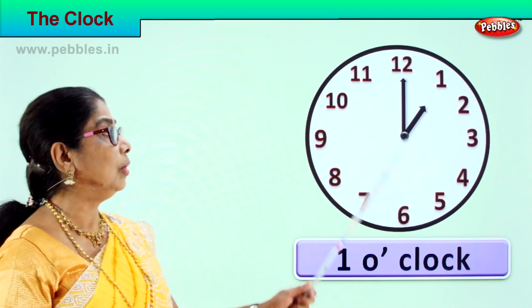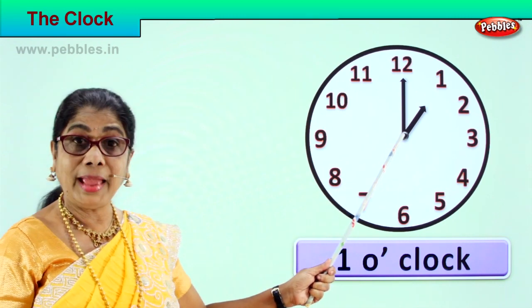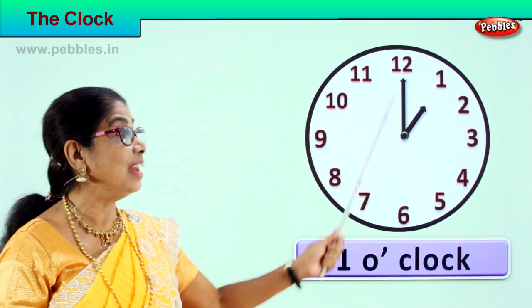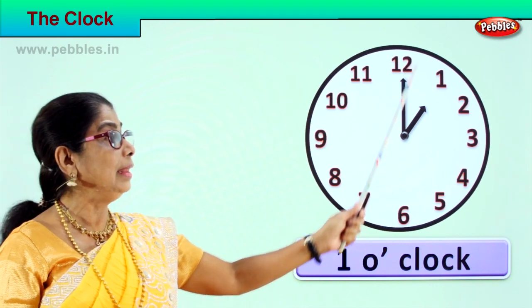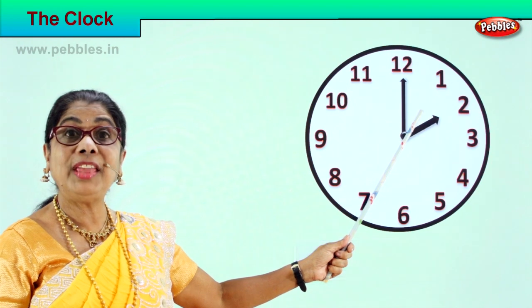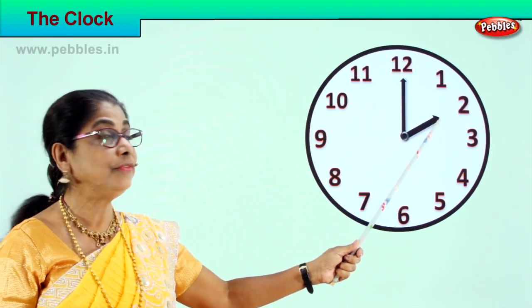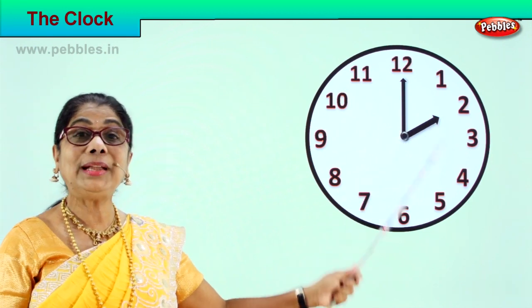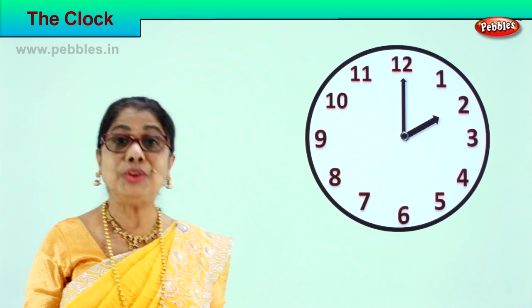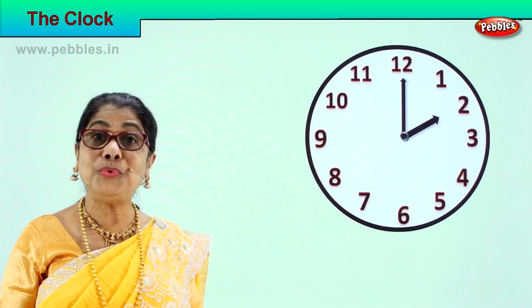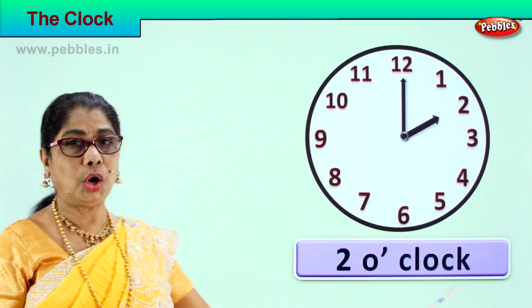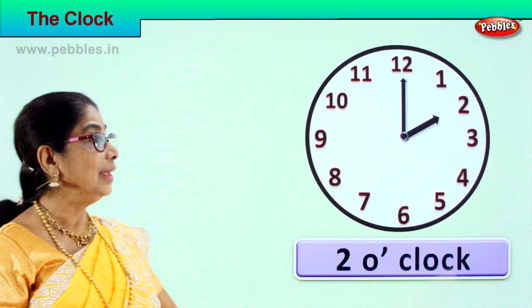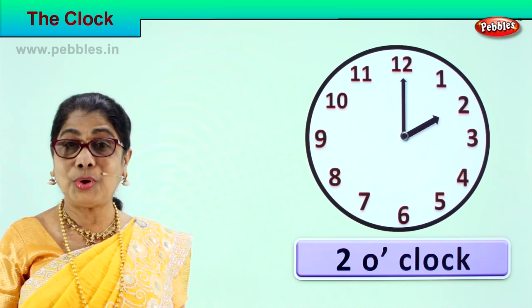When it becomes two o'clock, the long hand — the minute hand — would have gone once right round and comes back to twelve. In the meantime, the short hand — the hour hand — shifts to two. So now what time is it? How do you read it? Two o'clock, because the hour hand is on two. So we read it as two o'clock.